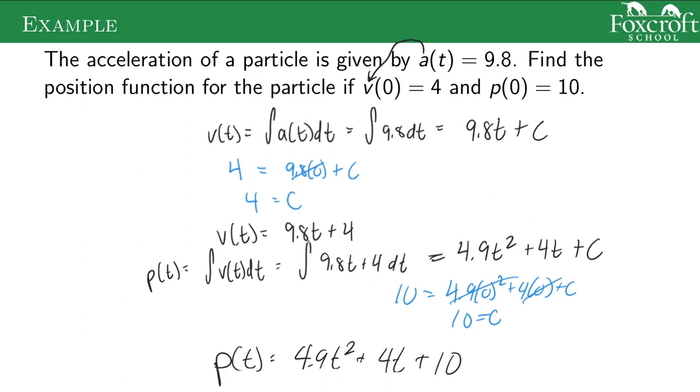So you can see the basic process of this is we're going backwards one antiderivative at a time. And we have to use this information they give us in order to find the c value. Because if we don't know the c value, we can't know the exact position. We just have these c's. But by knowing some extra information, we find the exact position at any given time.